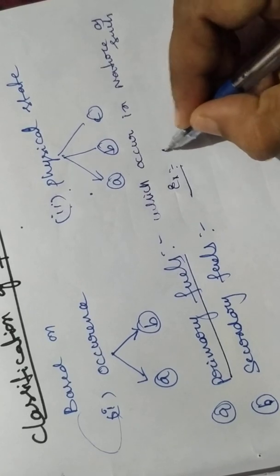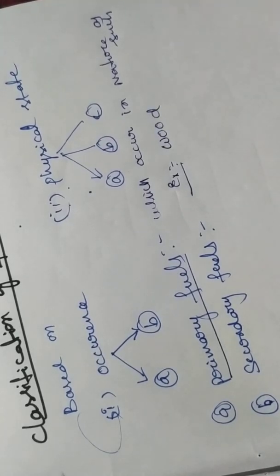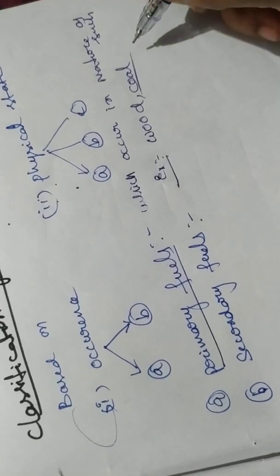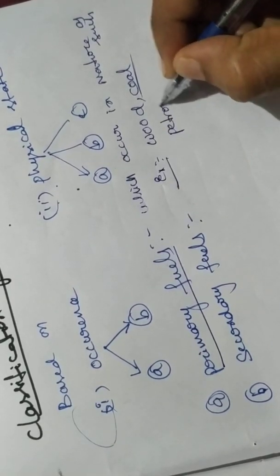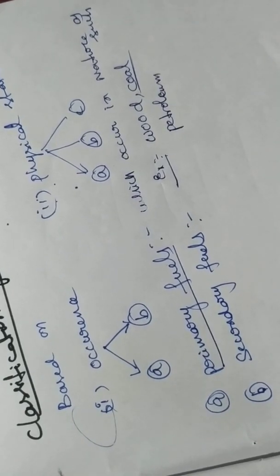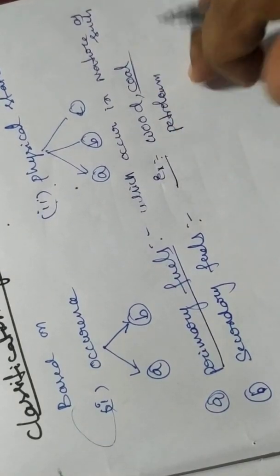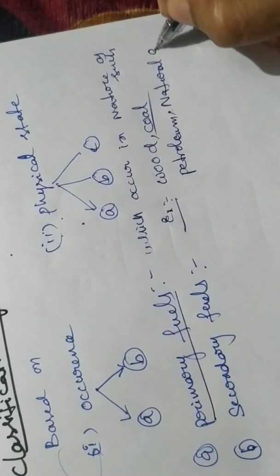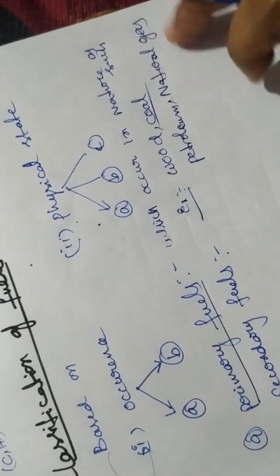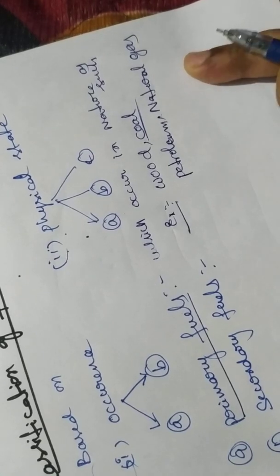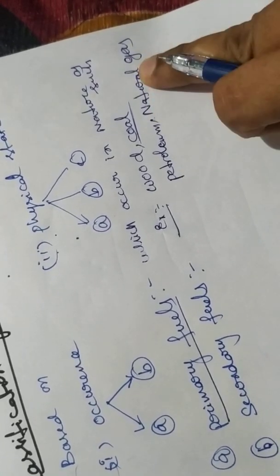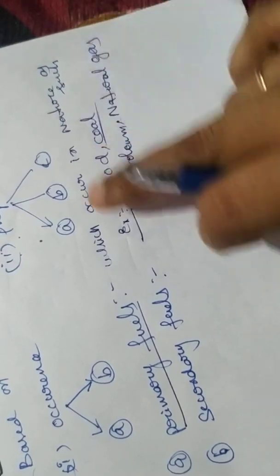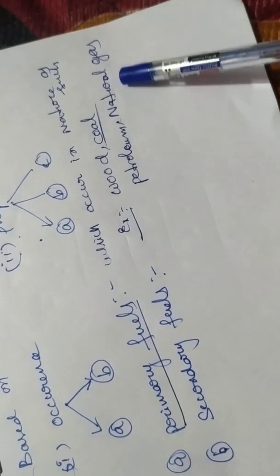Examples of primary fuels are wood, coal, petroleum, and natural gas. So primary fuels are those which occur in nature as such. For example: wood, coal, petroleum, and natural gas. Petroleum is the primary fuel from which petrol and diesel are derived.